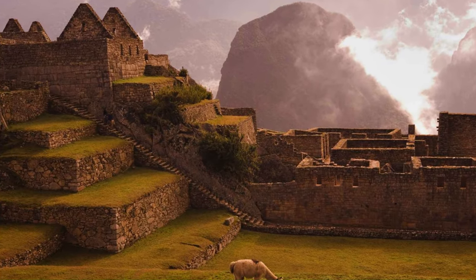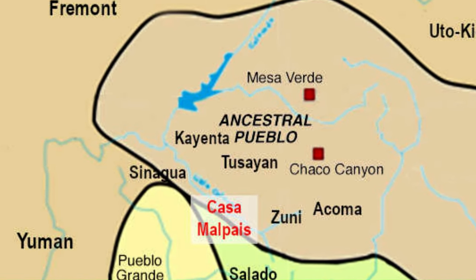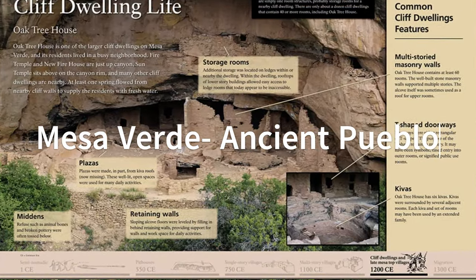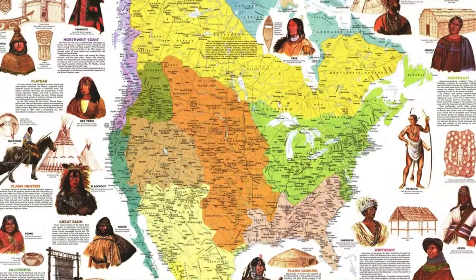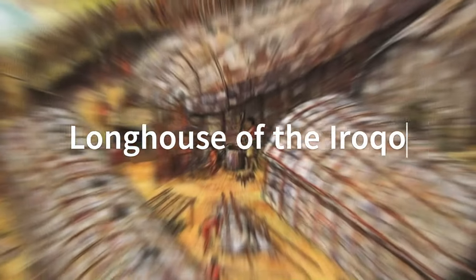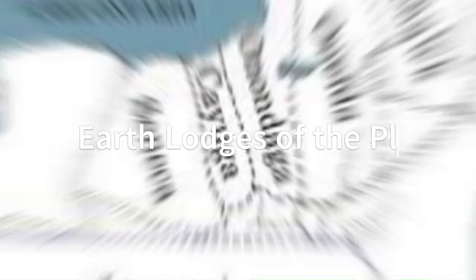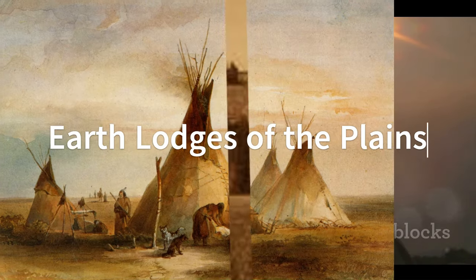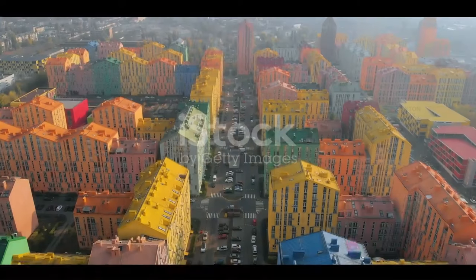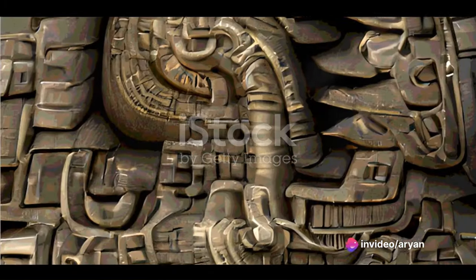The ancient Puebloan people in the southwestern United States crafted impressive cliff dwellings such as Mesa Verde, seamlessly blending architecture with the natural landscape. Throughout North America, various indigenous tribes created diverse architectural forms, from the longhouses of the Iroquois to the earth lodges of the inhabitants of the plains. Pre-Columbian architecture is a testament to remarkable craftsmanship, engineering skills, and spiritual significance that defined indigenous cultures across the Americas for thousands of years, leaving behind a legacy that continues to inspire awe and admiration.